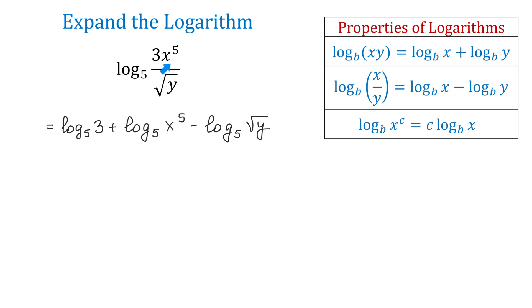So, this product becomes a sum of two logarithms. Then, because we have a quotient and square root of y is in the denominator, we subtract log base 5 of square root of y.